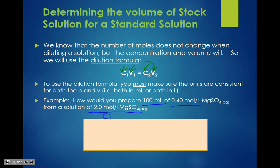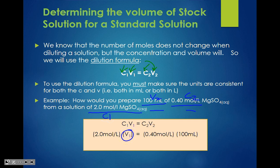So C1 = 2.0 moles per liter, C2 = 0.4 moles per liter, V2 = 100 milliliters, and I'm solving for V1. Using C1V1 = C2V2, I get V1 = 20 milliliters. To perform the dilution, I pipette 20 milliliters of the stock solution into a 100 milliliter volumetric flask, then fill the rest with water to the line, giving me the diluted solution.